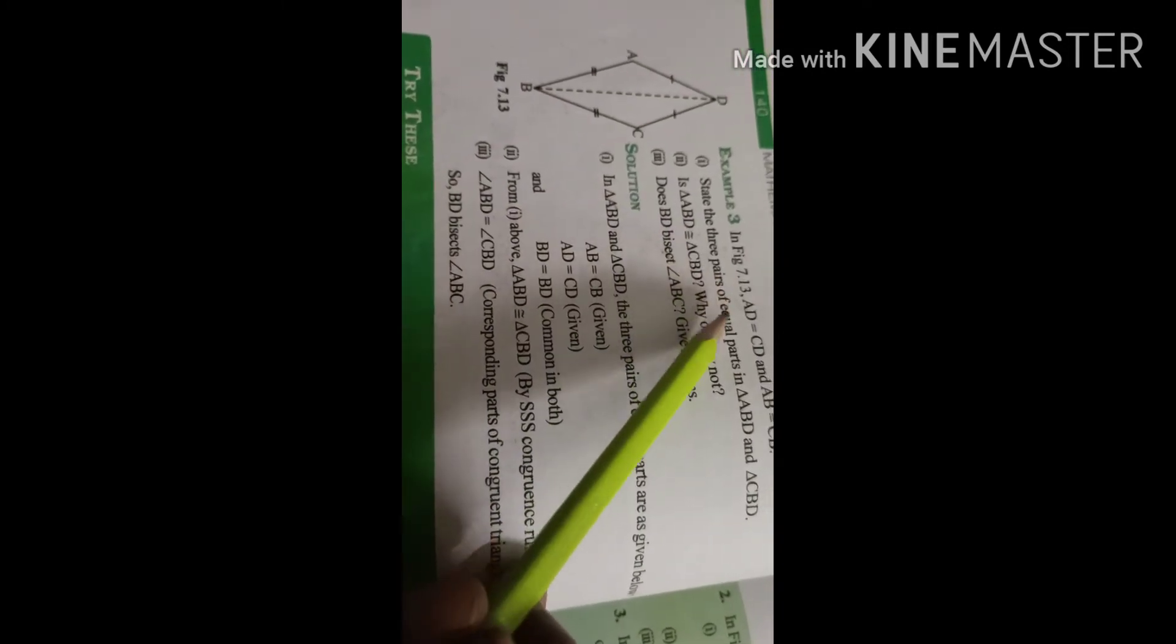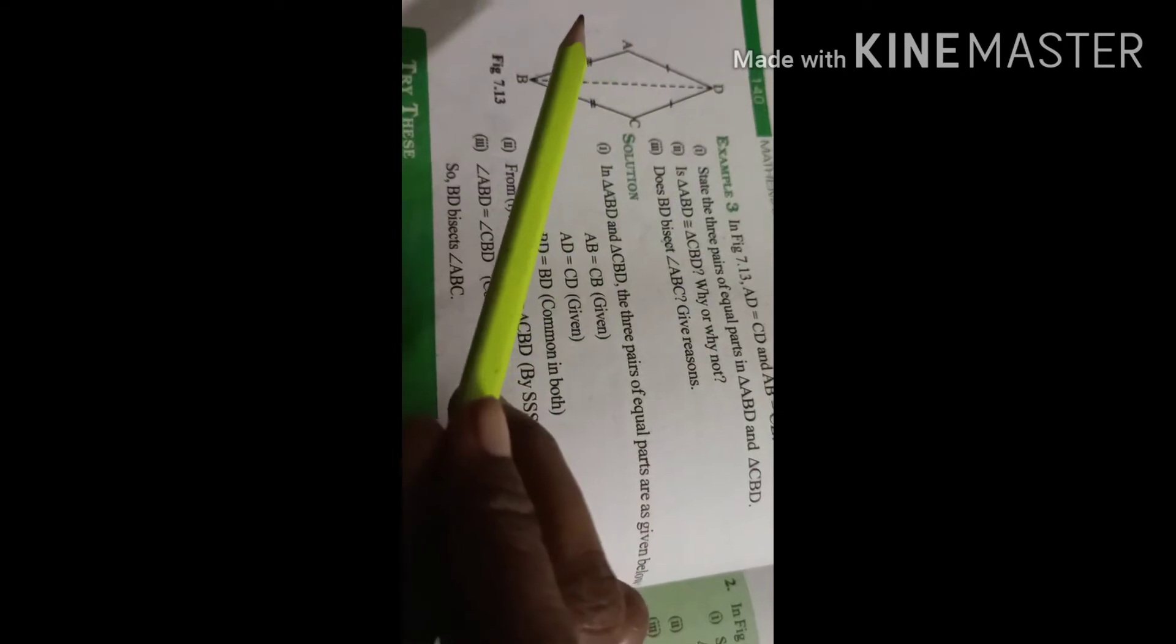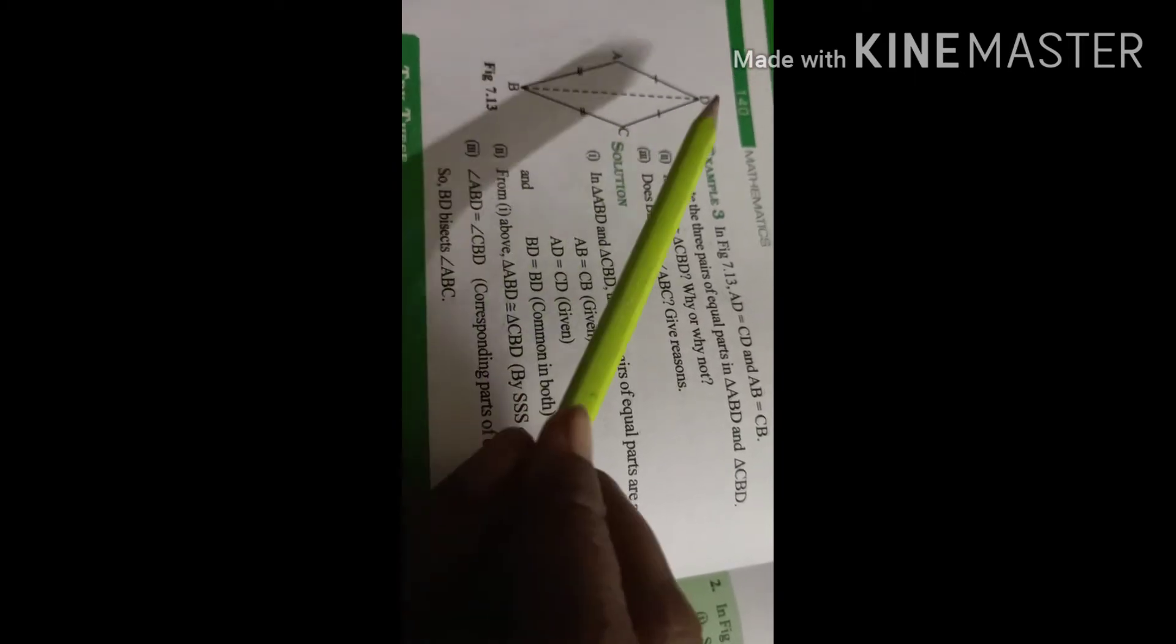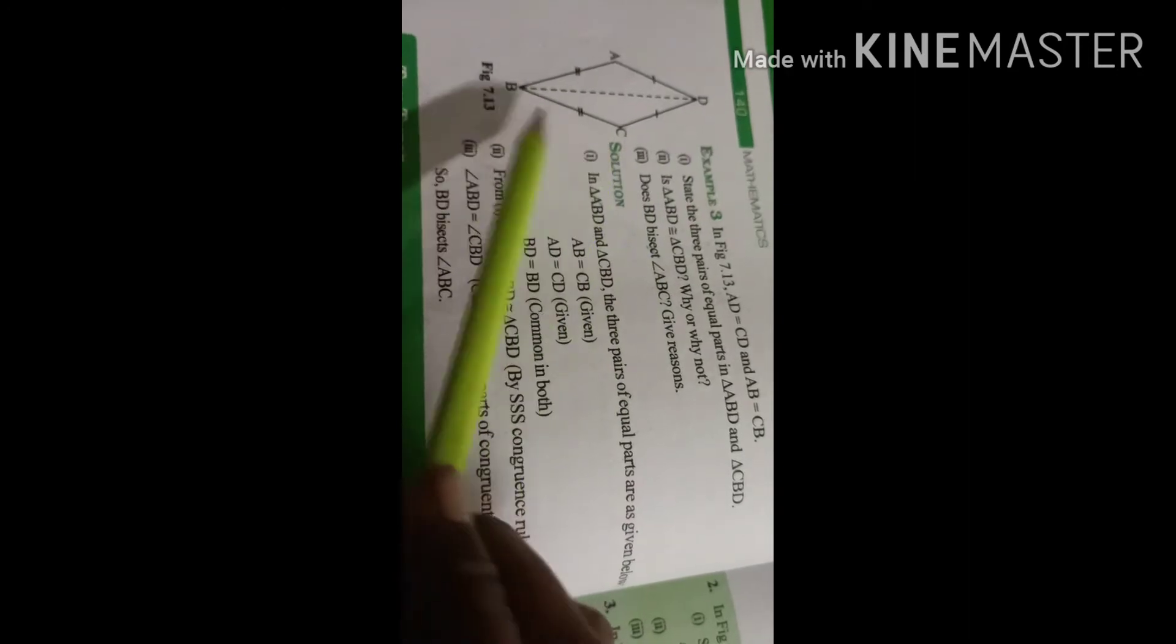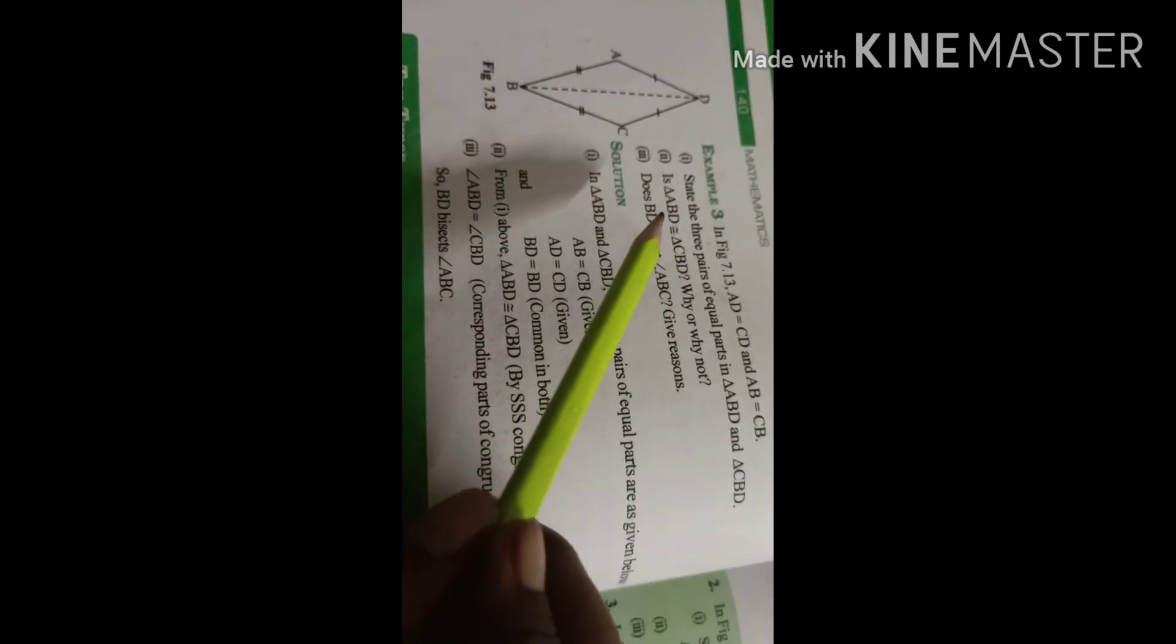In figure 7.13, AD is equal to CD, and AB is equal to BC. State the three pairs of equal parts in triangle ABD and triangle CBD. Are both the triangles congruent to each other? Does BD bisect angle ABC? Give reasons.